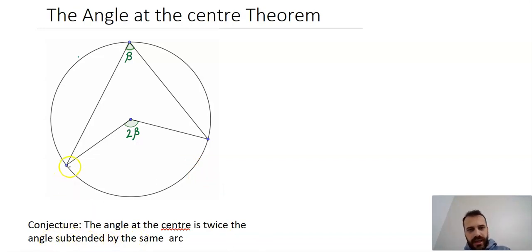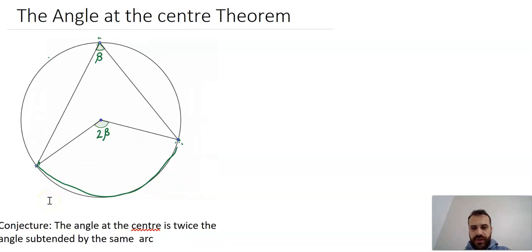Subtended by the same arc - this is the arc they're referring to. The angle at the center of that arc is twice the angle subtended by the same arc. Subtended means drawing a line from one point of the arc to the other end of the arc to the outside of the circle. As long as we're okay with that, we can now start proving it.